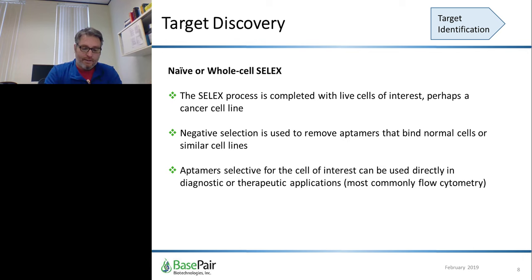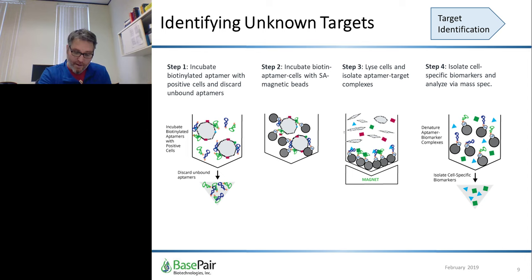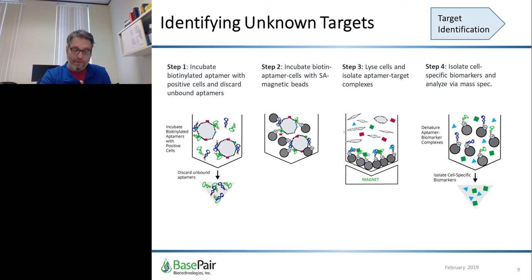Let's start with target discovery. Aptamers can be selected for binding to specific cells of interest without prior identification or isolation of a specific cell surface target. The SELEX process is completed with live cells of interest — perhaps a cancer cell line, virally infected cells, or other phenotypic cell type. Negative or subtractive selection is used to remove aptamers that bind normal cells or similar cell lines. Aptamers selected for cells of interest can then be directly used in diagnostic or therapeutic applications. Taking this further, novel unknown biomarkers can be identified using these same aptamers by immobilizing newly discovered aptamers on magnetic beads, incubating whole cells or a membrane protein preparation, and then isolating proteins for identification by 2D gels or mass spectrometry.